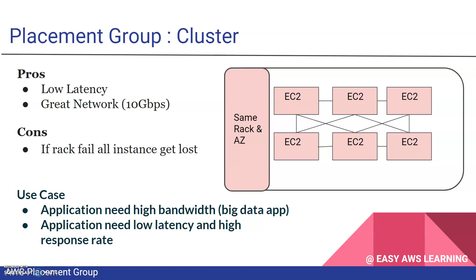Let's understand with the help of a diagram. The first is cluster — it uses the same rack within the same availability zone, giving low latency because all instances share the same rack with good network bandwidth of 10 Gbps. Of course, if this hardware fails, all instances will fail since they're on a single rack. The use case for cluster is applications needing high bandwidth, like big data applications, or applications requiring low latency and high response rate.